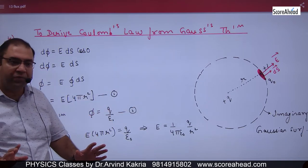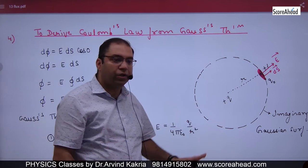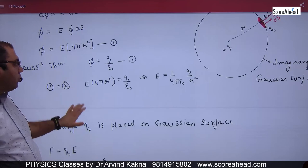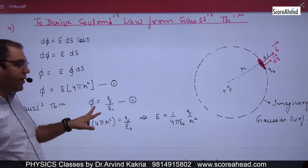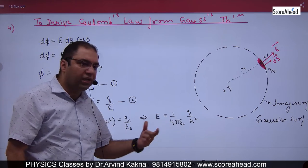Now what does Gauss theorem mean? What is the charge within this closed body? The charge here is Q. According to Gauss theorem, flux is q by epsilon naught. You can equate them. So what is the E value?